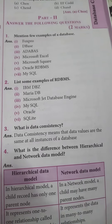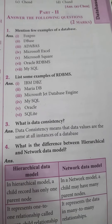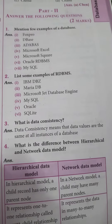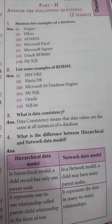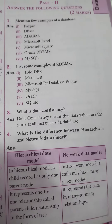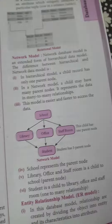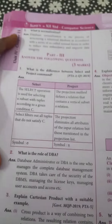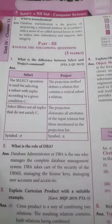First question: mention a few examples of database. Second one: list some examples of RDBMS. Third one: what is data consistency? Fourth one: what is the difference between the hierarchical and network data model? And fifth one: what is normalization? Next, answer the following questions in 3 marks.